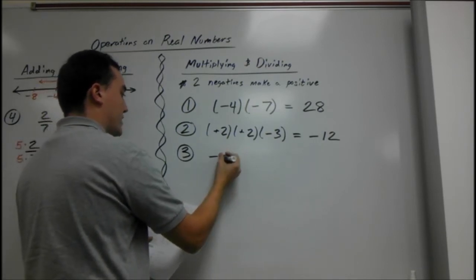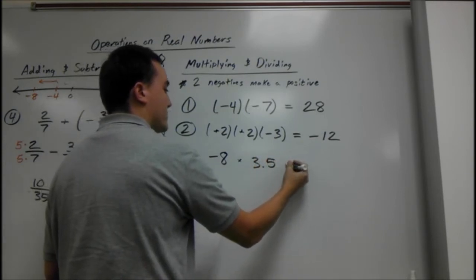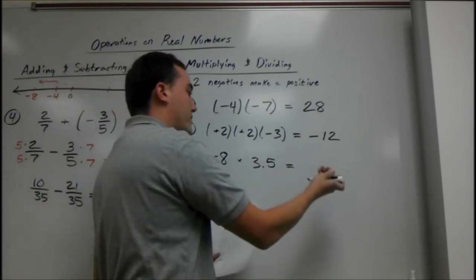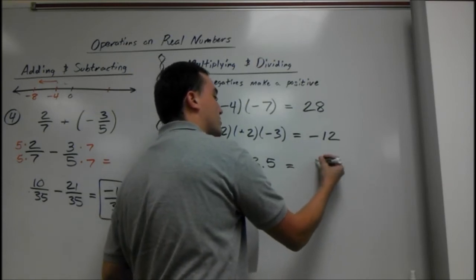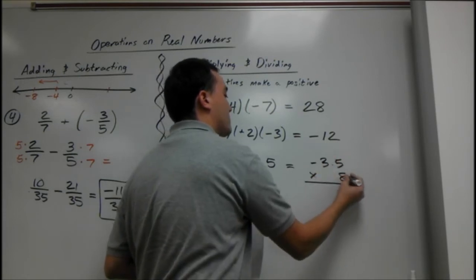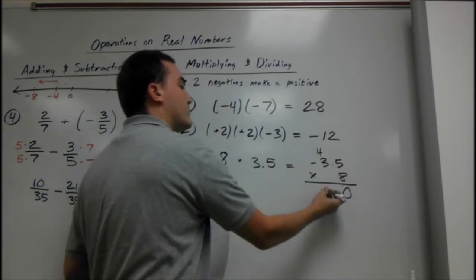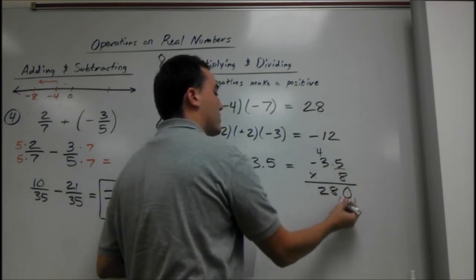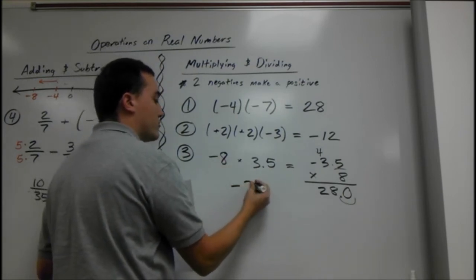Say we have negative eight times three point five. We have a negative times a positive. Since there's only one odd amount of negatives, we get a negative for our answer. But we can also multiply it out how we usually do. Say we have negative three point five times eight. Eight times five is forty, four goes up here, and we add that. Eight times three is twenty-four, plus four is twenty-eight. And there's one decimal place, so that becomes twenty-eight. And since there's one negative here, the answer is going to be negative twenty-eight.